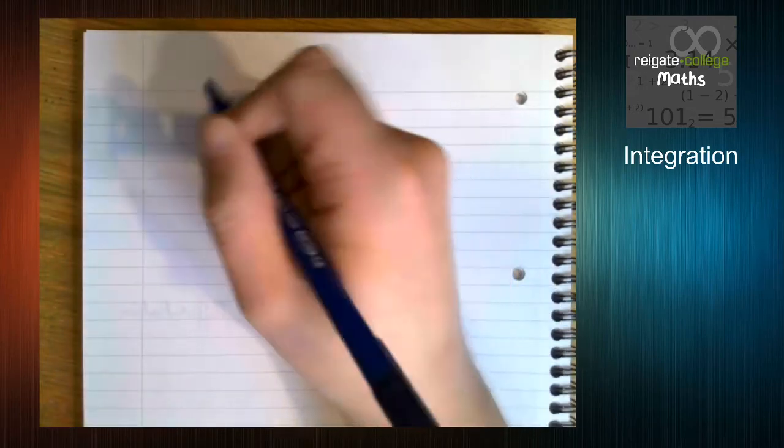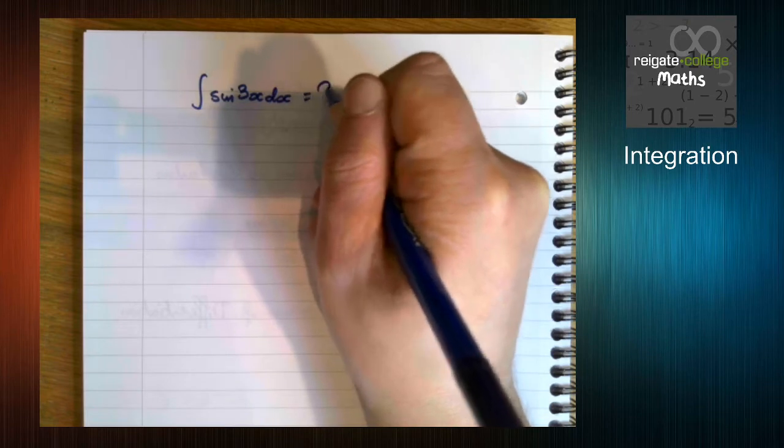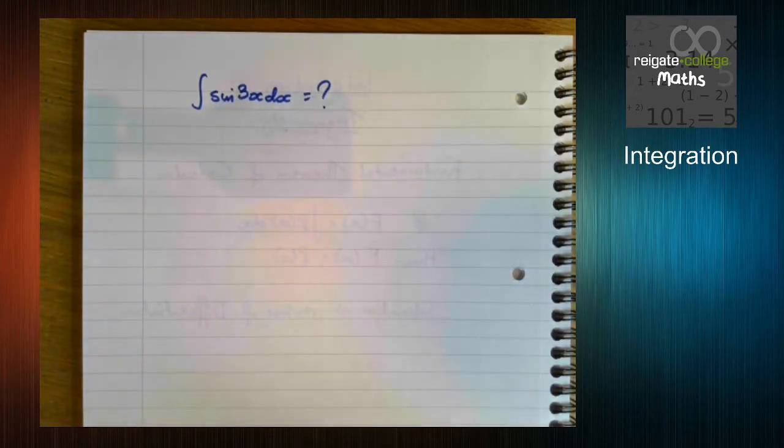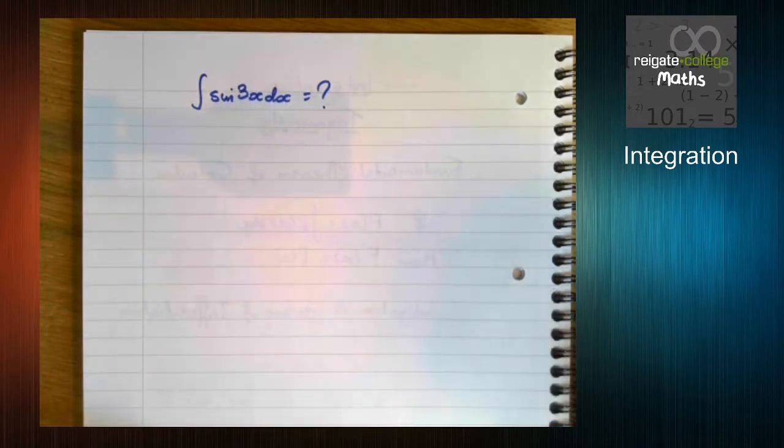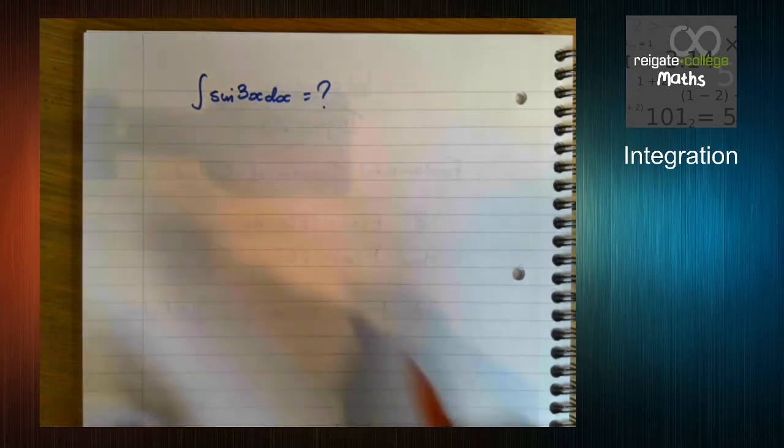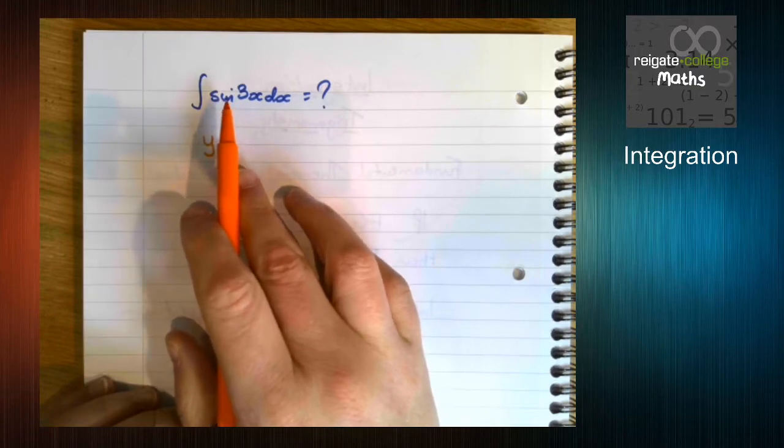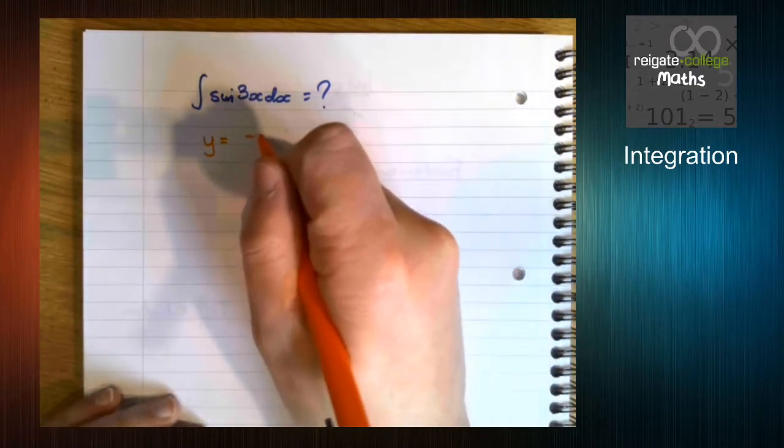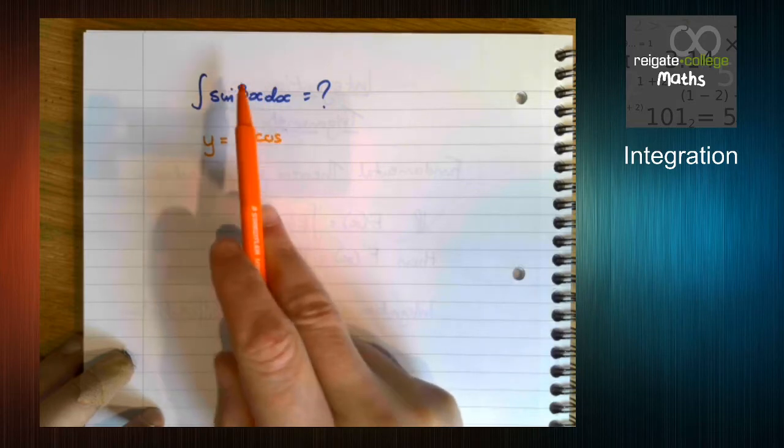Now we need to consider what happens if we start putting numbers inside our trig function. So let's have a think about sine 3x for instance. What does this integrate to? Well, we need to think, what would differentiate to give us this kind of thing? So let's start by thinking about, well, we know that sine will integrate to minus cos. So let's start thinking about that. And then let's start thinking about when we do differentiation, what happens to this? Well, this doesn't change.